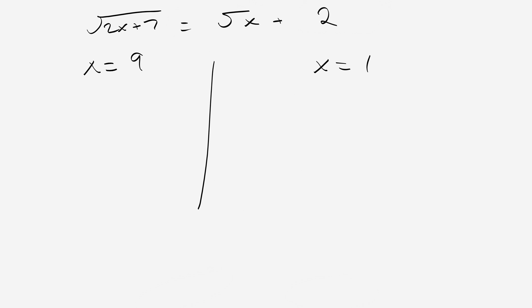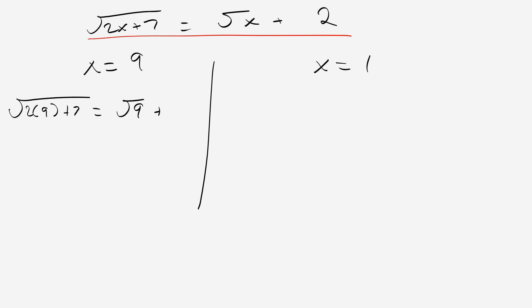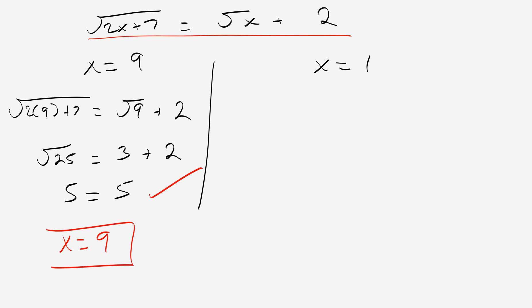Our original equation was: square root of 2x plus 7 equals root of x plus 2. We had two solutions: x equals 9 and x equals 1. Checking x equals 9: the square root of 2 times 9 plus 7 — does that equal root 9 plus 2? 18 plus 7 is 25. So square root of 25 — does that equal 3 plus 2? Is 5 equal to 5? Yes. So x equals 9 is a valid solution.